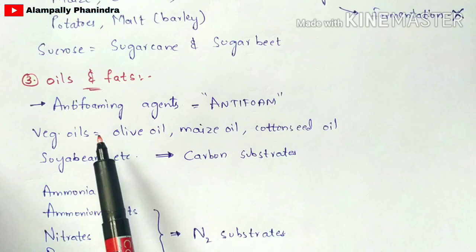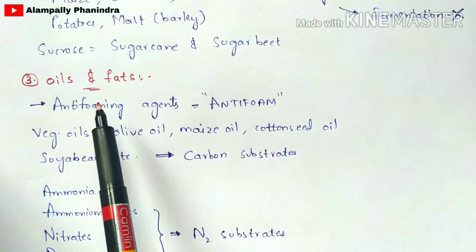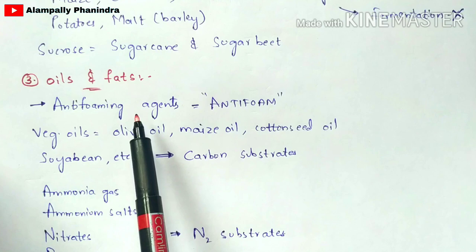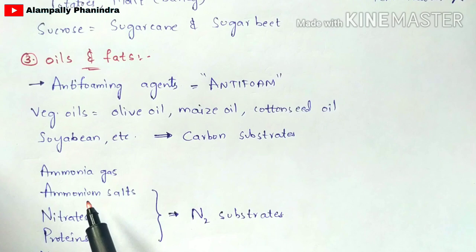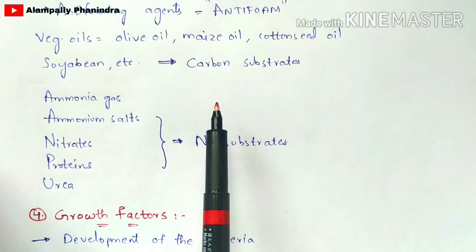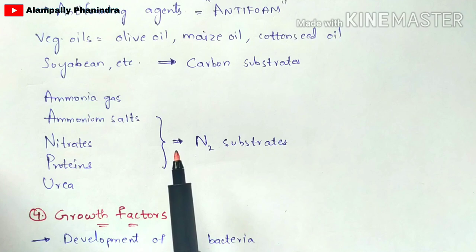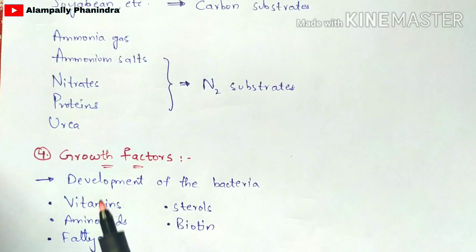The third component is oils and fats. Oils and fats act as anti-foaming agents, preventing foam from forming during the fermentation process. These include vegetable oils such as olive oil, maize oil, cottonseed oil, and soybean oil. Carbon sources as well as nitrogen sources — such as ammonia gas, ammonium salts, nitrates, proteins, and urea — are also included. Carbohydrates and oils and fats are classified as energy sources.